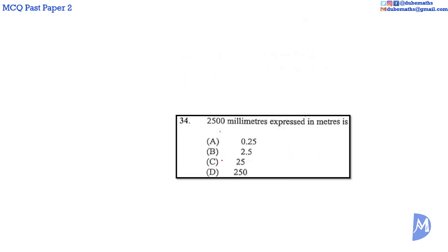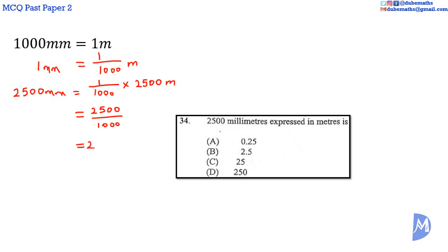Question 34. There are 1000 millimeters in a meter. Therefore, in 1 millimeter there is 1 over 1000 meters, and in 2500 millimeters there is 1 over 1000 multiplied by 2500 meters. Multiplying out, this gives 2500 divided by 1000, which is equal to, moving the decimal point three places to the left, 2.5. The answer is B.